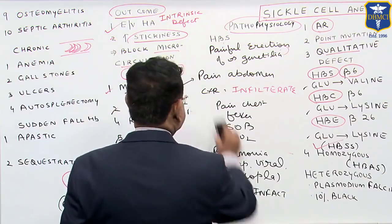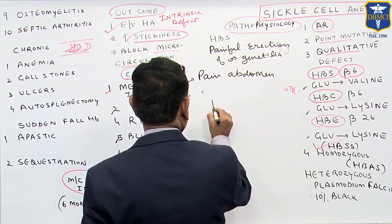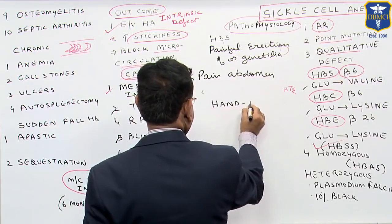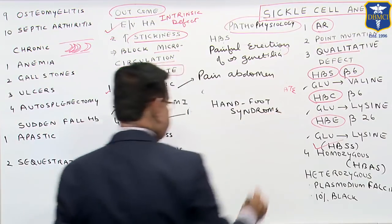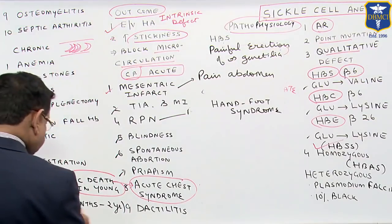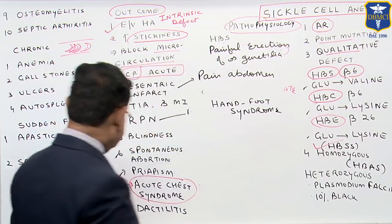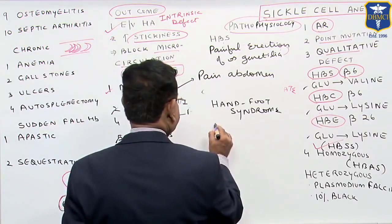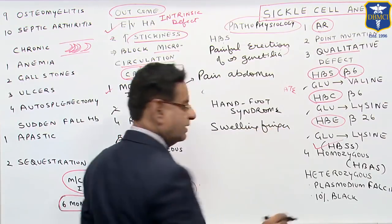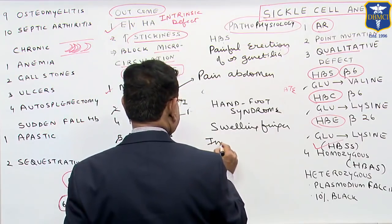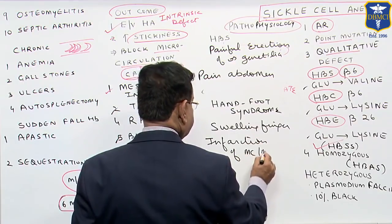The next problem is dactylitis, also known as hand-foot syndrome. This is classically seen in children between 6 months and 2 years of age, and is uncommon after age 2. There is swelling in the fingers or toes, and there may be infarction of the metacarpals and metatarsals.